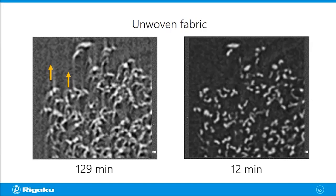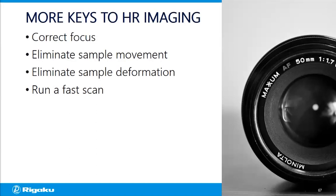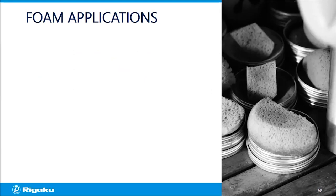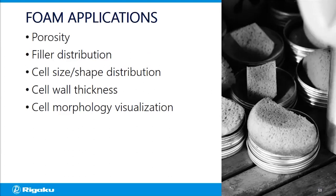To summarize the keys to high-resolution imaging: use a high magnification factor or switch to the parallel beam geometry. Additionally, correct the focus, eliminate sample movement, wait long enough for the sample to stabilize, and run a fast scan if necessary. Now, using those techniques, let's look at more examples. For foams, you can analyze porosity, filler distribution, cell size, shape and distributions, cell wall thickness, and overall morphology.